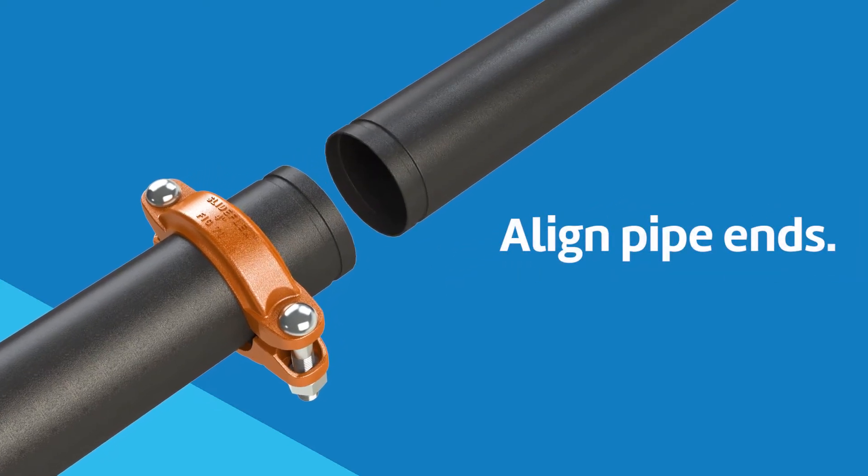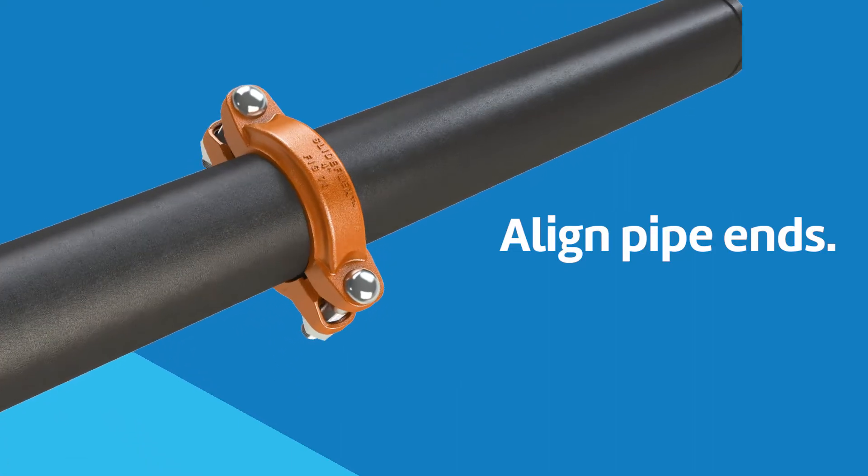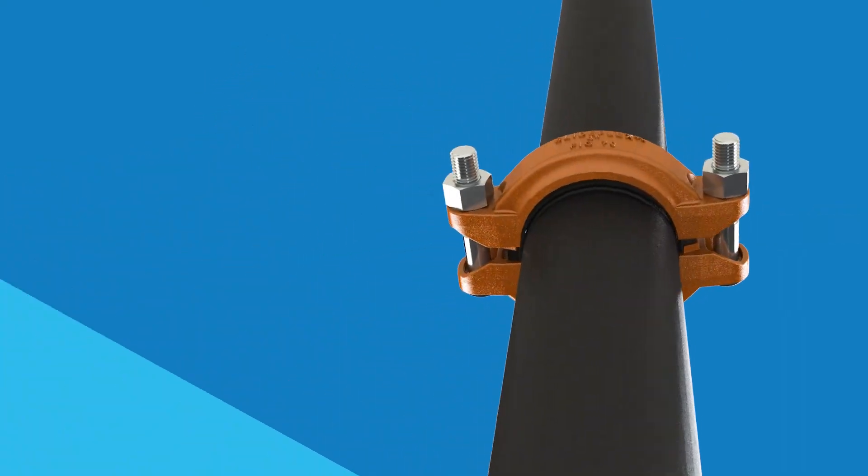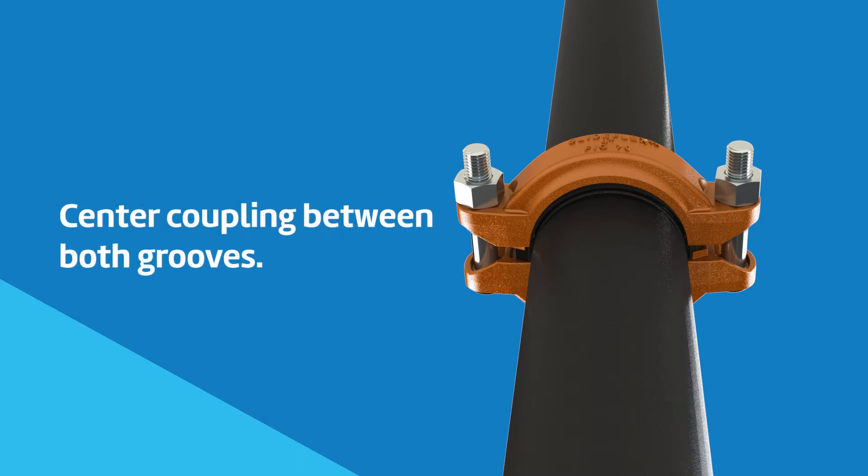Align the two pipe ends and slide the figure 70 coupling back over grooves so that the coupling keys are positioned over the respective grooves on each pipe end.